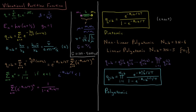To generalize this to polyatomic molecules: for diatomic molecules they only have one vibration. The number of vibrations for a linear molecule is 3N minus 5. For a diatomic, N equals 2, so 3N minus 5 equals 1. For a general linear molecule they have 3N minus 5 vibrations, and for a nonlinear molecule they have 3N minus 6 vibrations. They'll have that many vibrational constants and that many vibrational temperatures. So the total vibrational partition function is a product of all the individual vibrational partition functions — a product from i equals 1 over all vibrations of e to the minus theta vib i over 2T, divided by 1 minus e to the minus theta vib i over T.